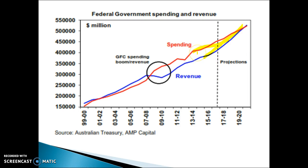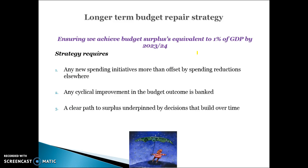It has taken quite a long time for spending and revenue to converge. The longer-term budget repair strategy is to achieve budget surpluses equivalent to 1% of GDP by the year 2023-24. To do that, any new spending initiatives have to be offset by reductions in spending in other areas — for example, disability care funded by increasing the Medicare levy, or if taxes are reduced in some areas, they may be increased in others.